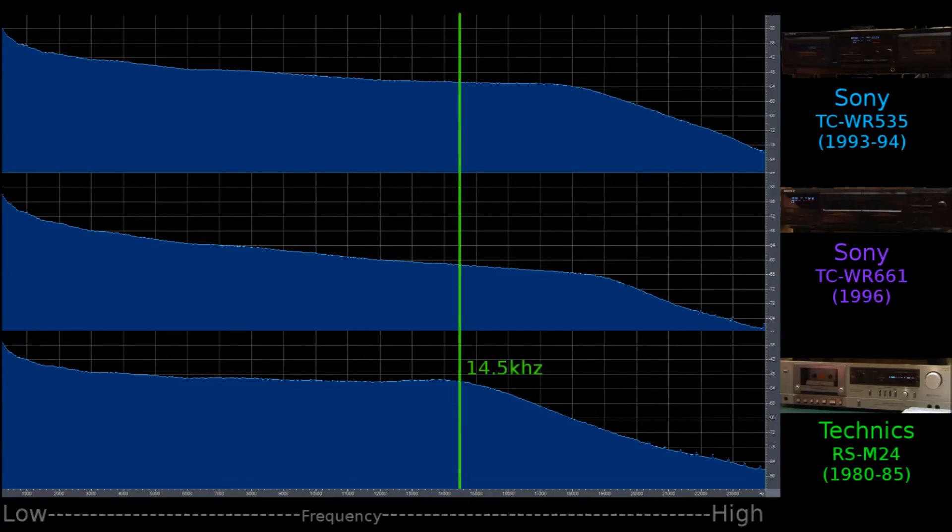Here is the signal from one kilohertz and above. And you'll see the Technics deck starts to drop around 14 and a half kilohertz. The WR661 Sony drops around 18.8 to 19 kilohertz. And the 535 Sony drops around 18 and that's pretty standard for a compact cassette player or recorder. You're really not going to get anything over 18 kilohertz.